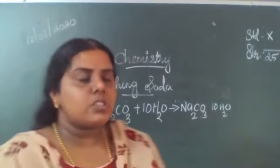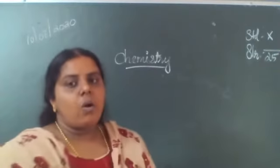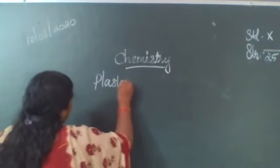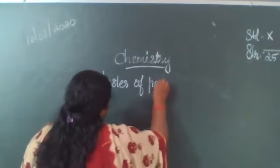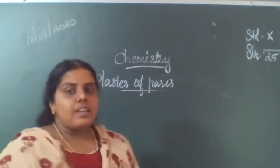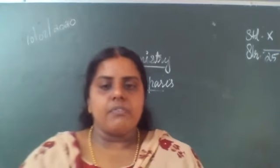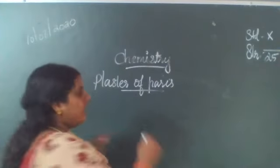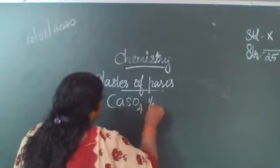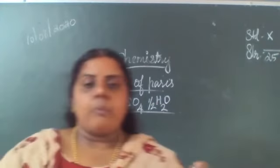The next salt is plaster of Paris. Its chemical name is calcium sulfate hemihydrate. Its formula is CaSO4·½H2O — this is the formula of plaster of Paris.